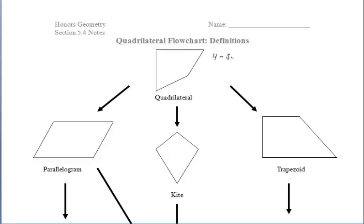Let's start off with the quadrilateral. A quadrilateral is a four-sided polygon, and all of the shapes on this page are quadrilaterals. We have three different groups to focus on: a parallelogram, a kite, and a trapezoid.